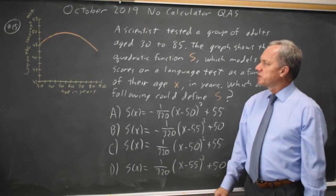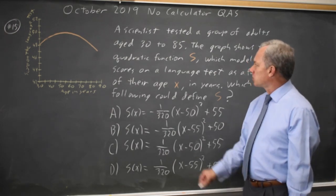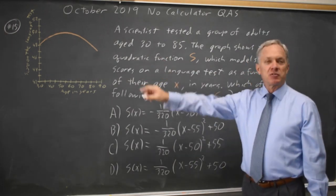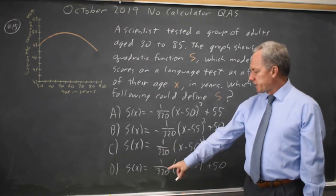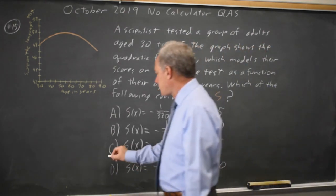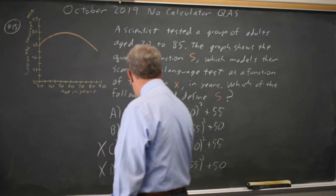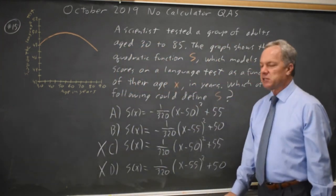Since the graph is a parabola opening down, we're told it's quadratic, and clearly from the graph it opens down. Choices C and D, which have positive leading coefficients and open up, have to be wrong, so we can eliminate those two choices. We're down to A and B.